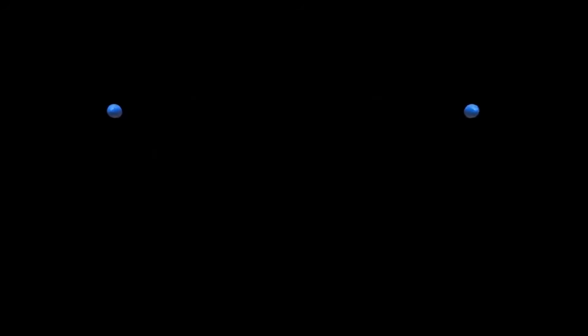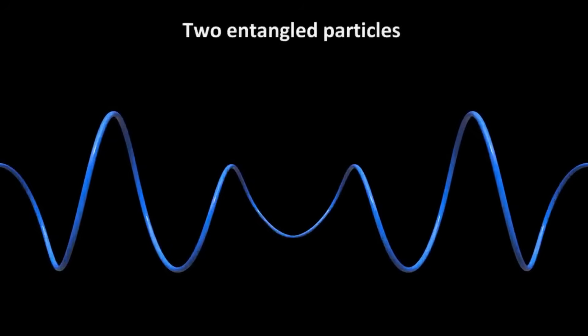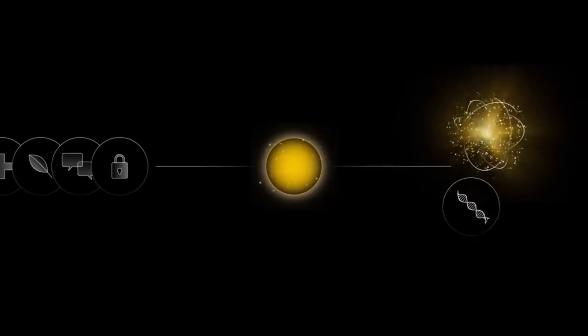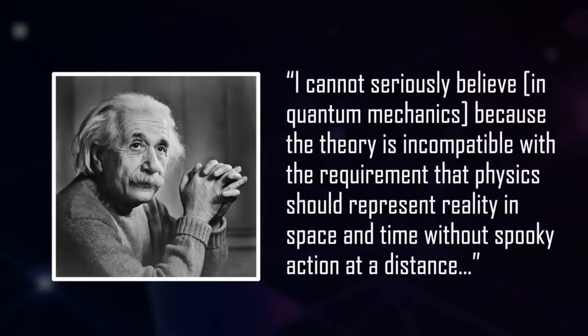Second, entanglement. Two particles can become linked so that the state of one instantly determines the state of its partner, regardless of distance. A phenomenon Einstein called spooky action at a distance.